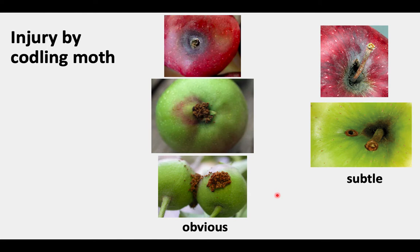Here are some pictures of the typical injury caused by codling moth. In the middle group of pictures, it's a more obvious form of damage, such as a hole in the side of the apple, a plug of frass, typically at the calyx end of the apple. Frass is a sawdust-like type of insect feces that is pushed out behind the worm as it tunnels into the fruit.